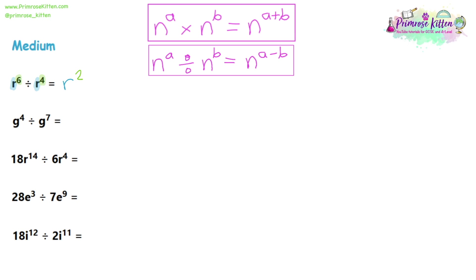Moving on to question 2. Same method — identify the base: G on both sides, so write G. Then we have powers: power 4 and power 7. We're going to do 4 take away 7. That's a small number take away a large number, so we'll have a negative number answer — negative 3. You can have negative number powers, that's absolutely fine. So the answer is G to the power of negative 3.